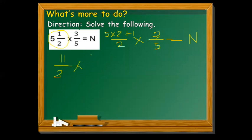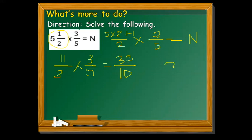Now that it is no longer a mixed number, we multiply: eleven-over-two times three-over-five. Multiply the numerators: 11 times 3 equals 33. Multiply the denominators: 5 times 2 equals 10. We get thirty-three over ten.